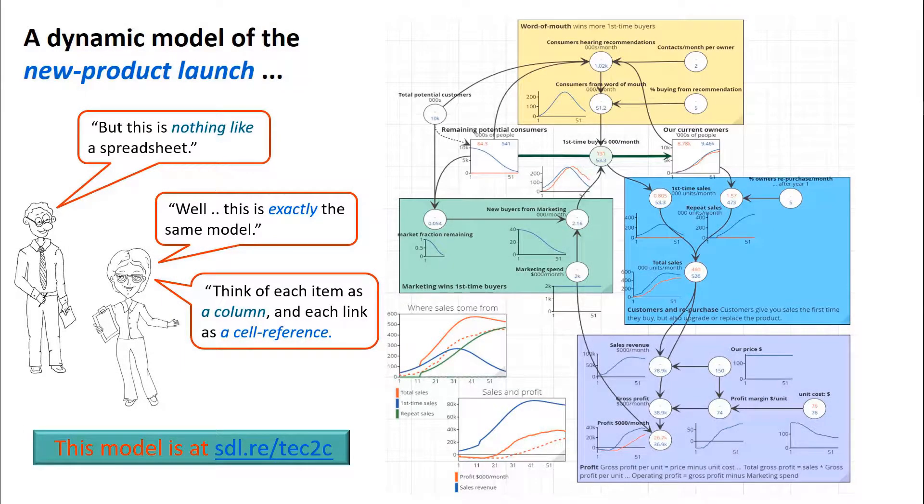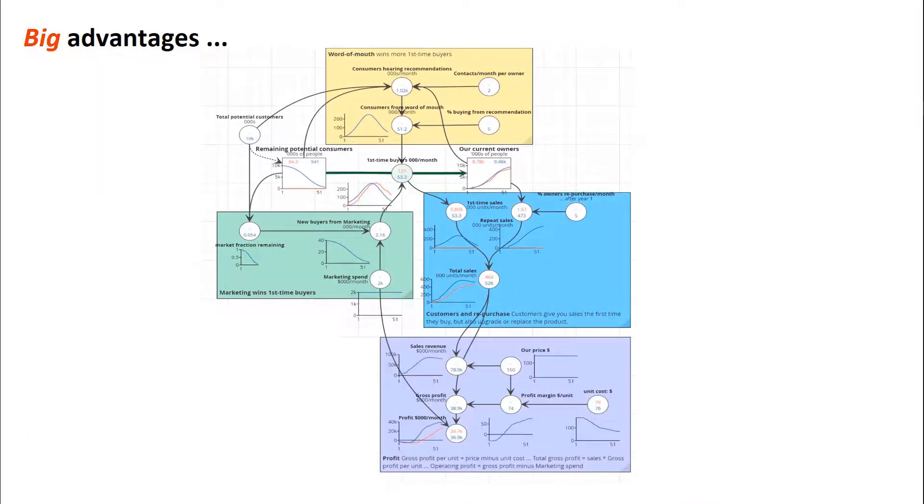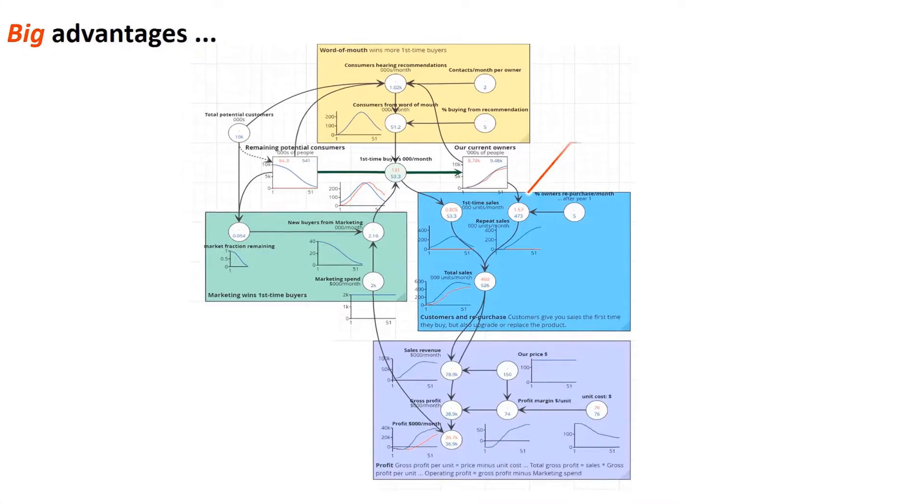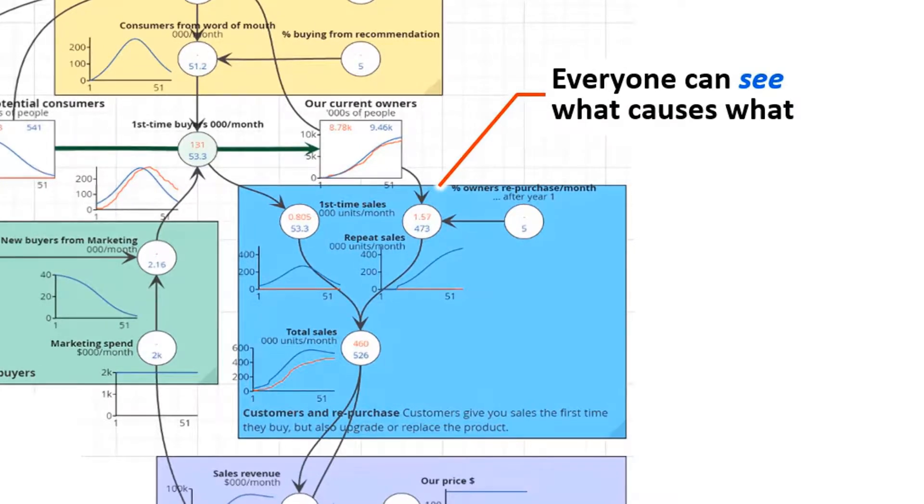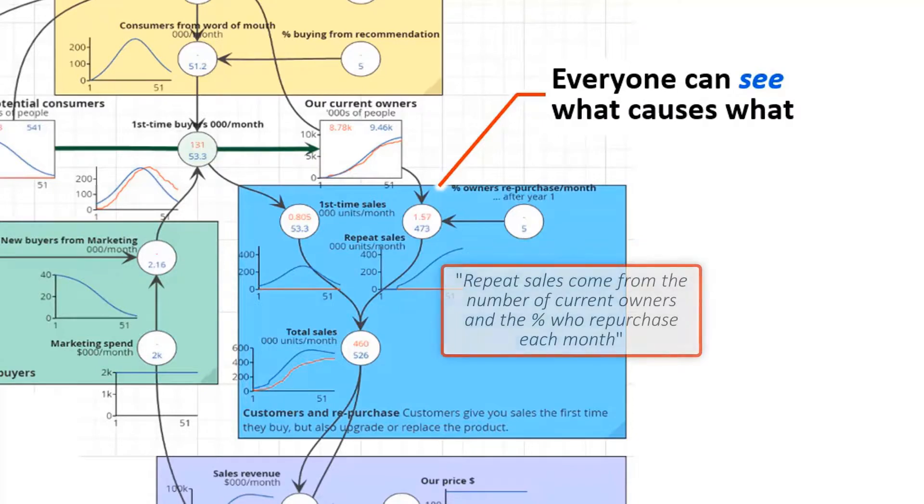Given that this model is the same as the spreadsheet, why would we need this instead of that spreadsheet? There are some big advantages. First of all, everyone looking at this can see what causes what. You can imagine people sitting in a meeting room looking at this on the screen and everyone can see how everything connects to everything else.